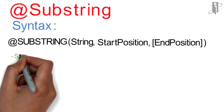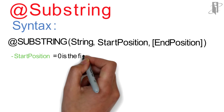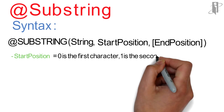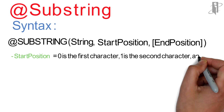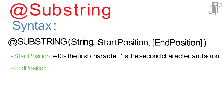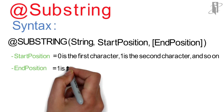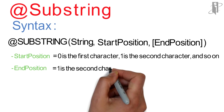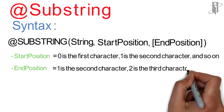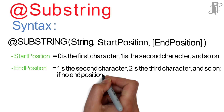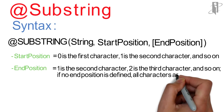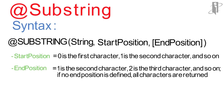Your start position will start with zero — zero is the first character, one is the second character, and so on. The end position is an optional parameter: one is the second character, two is the third character, and so on. If you do not define an end position, then all of the characters will be returned.